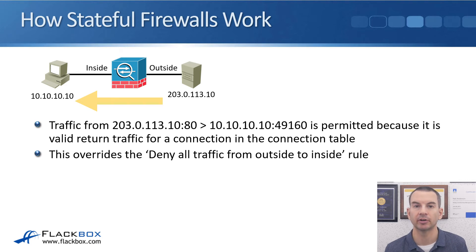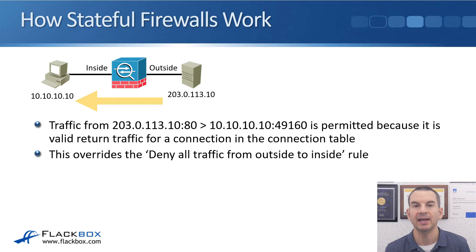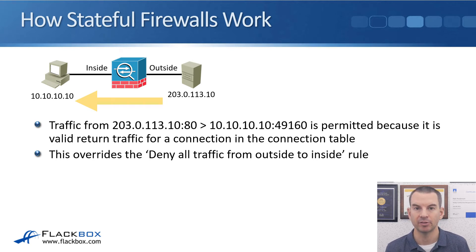The web server then sends return traffic back to the inside host, with source and destination IP addresses and port numbers flipped. The traffic comes from 203.0.113.10 port 80, destined for 10.10.10.10 port 49160 — matching the existing connection table entry. The firewall sees this and permits the return traffic because it's valid return traffic for an existing connection, overriding the deny-all-from-outside rule.